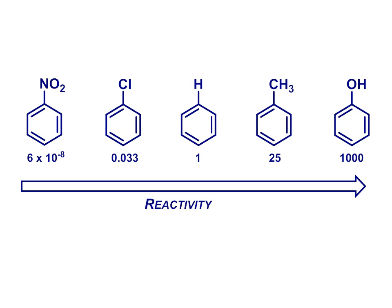Overall, this gives quite a variation in reaction rates. The numbers shown here are the relative reaction rates for a nitration reaction. You can see that phenol is 1000 times faster than benzene in this reaction, which is itself many orders of magnitude faster than nitrobenzene.